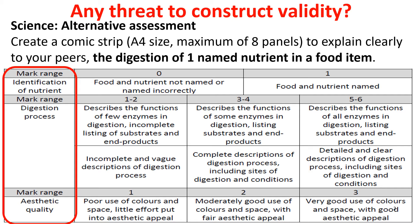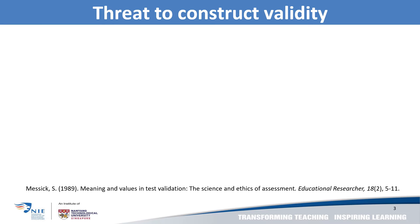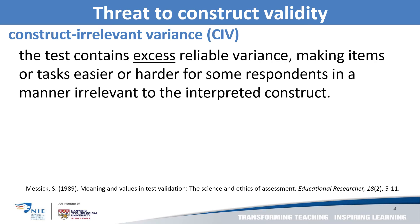Would you agree that the criteria of aesthetic quality may be an issue to construct validity? Students who may not be able to draw are inhibited in demonstrating their understanding. Even if they understood the digestion of a named nutrient in a food item, this assessment doesn't allow them to demonstrate that. This is an example of a threat to validity known as construct irrelevant variance.